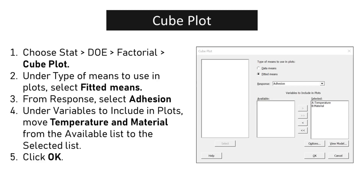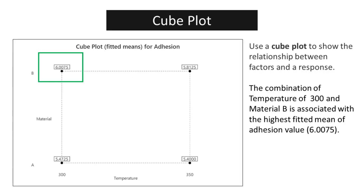The cube plot in Minitab is a powerful visualization tool that allows users to simultaneously view three variables in a three-dimensional space. Choose STAT > DOE > Factorial > Cube Plot. Under type of means to use in plots, select Fitted Means. From response, select Adhesion. Under variables to include in plots, move Temperature and Material to the selected list. Click OK. Use a cube plot to show the relationship between factors and a response. The combination of temperature 300 and material B is associated with the highest fitted mean adhesion value of 6.0075.